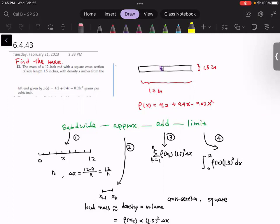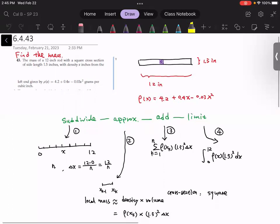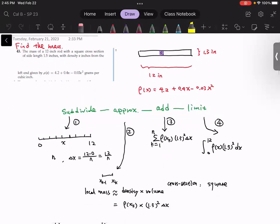We will follow the four-step procedures. First, we will subdivide the interval into n pieces. For each sub-interval, the length is given by 12 divided by n.